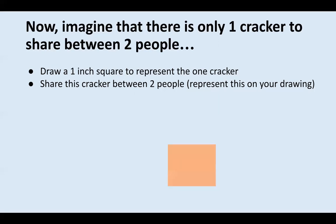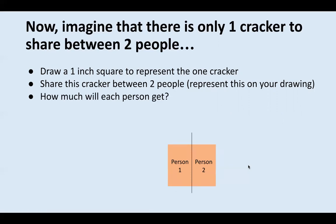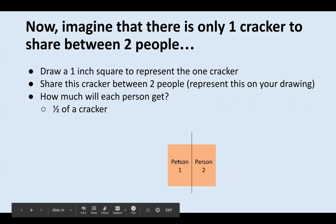Now I need you to share this cracker between two people in your math journal right now. I'm going to take my cracker and share it between two people by breaking it in half. I'm labeling each half so I know which half goes to which person — person one gets the left side and person two gets the right side of the cracker. So how much does each person get? Hopefully you said each person gets one half of a cracker, because we split that cracker right down the middle.